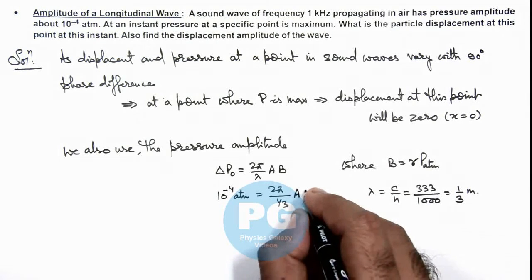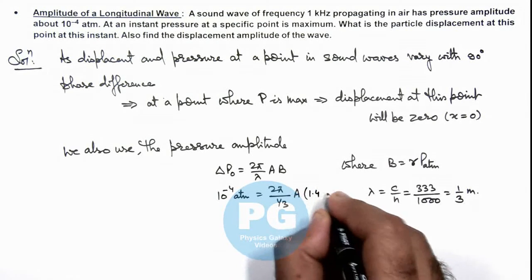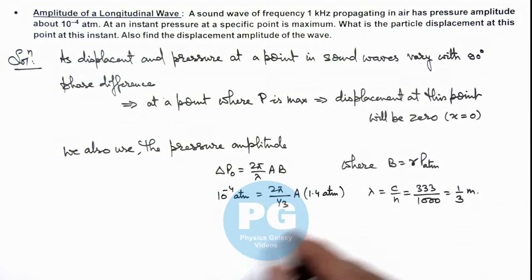So in this situation, this can be written as 1.4 times the atmospheric pressure. Here atmospheric pressure also gets cancelled out.